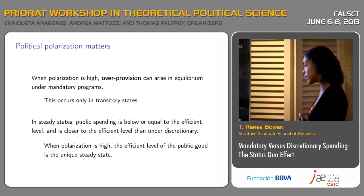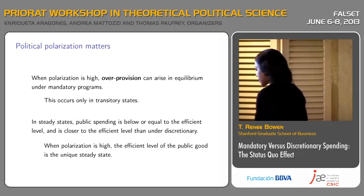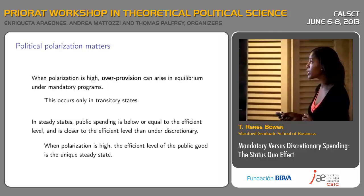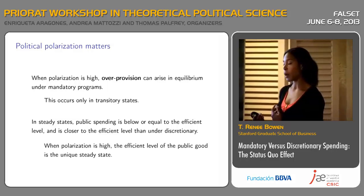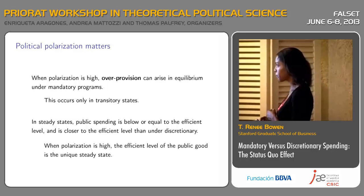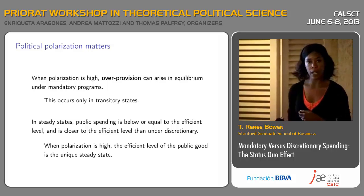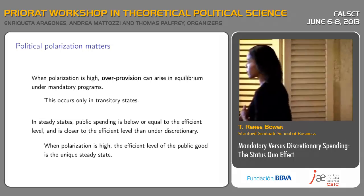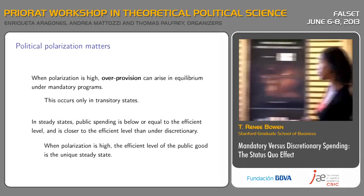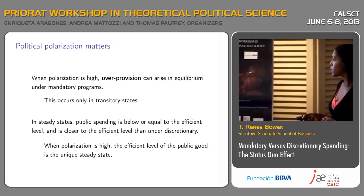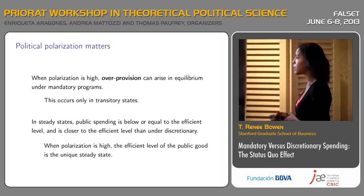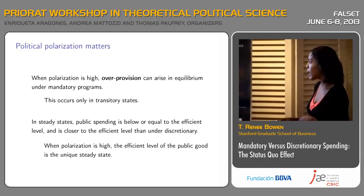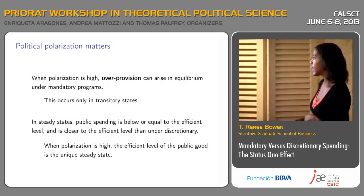We'll find that political polarization — which is the difference in the ways these parties place value on the public good — matters quite a bit. In particular, when polarization is very high, we can get over-provision of the public good, that is, provision above the efficient level. But this only occurs in transitory states. In the high polarization case, the unique steady state is going to be the efficient level of the public good. In steady states, public spending is either below or equal to the efficient level when polarization is sufficiently low, but it's always closer to the efficient level than under discretionary.